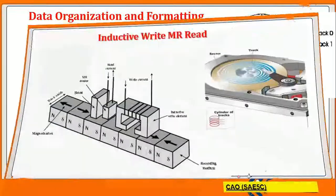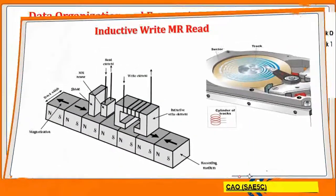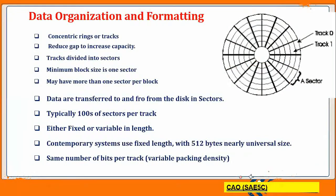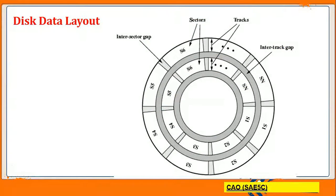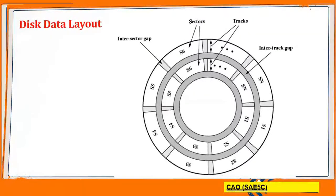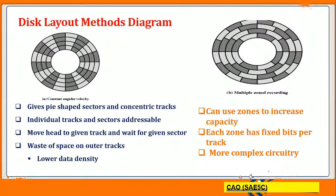This is the diagram showing the structure of the head. Next, how is the data organized on a disk? The data is organized in a disk as tracks, and each track is divided into sectors. In this disk data layout, S represents the sectors and the circular paths represent the tracks. Each track is divided into sectors, and the disk layout has two layers.